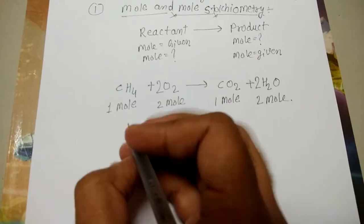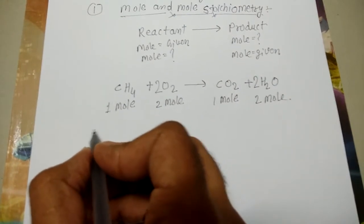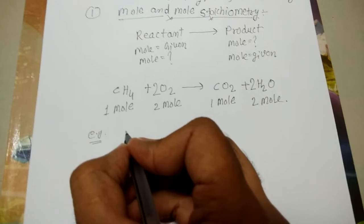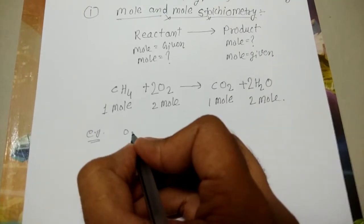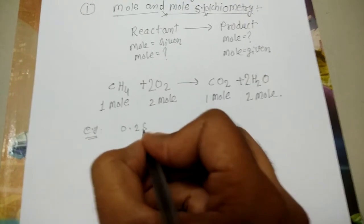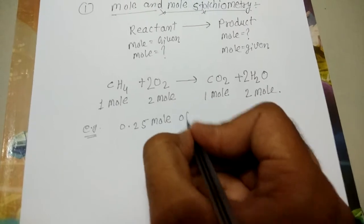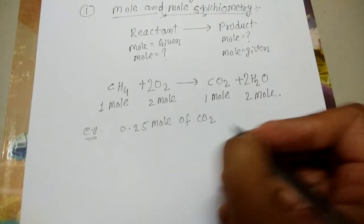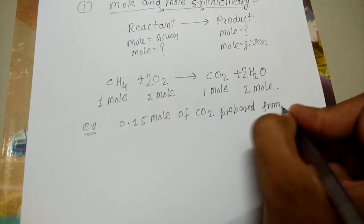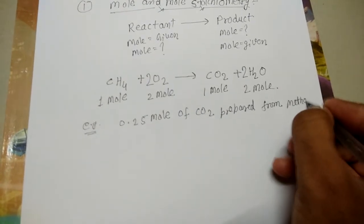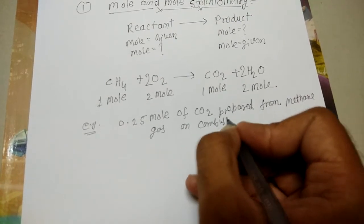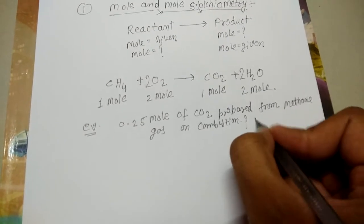Now suppose as an example, you are asked: what is the mole of oxygen if 0.25 mole of CO2 is prepared from methane gas on combustion? So what is the mole of oxygen?